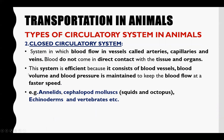The second type is called the closed circulatory system. In this system, blood flows through blood vessels differentiated into arteries, capillaries, and veins. Arteries carry blood from the heart; capillaries are involved in the exchange of nutrients and gases; and veins bring blood back to the heart. Blood is not in direct contact with the cells — communication occurs through interstitial fluid. This system is very efficient, and blood vessels maintain blood volume and pressure, allowing blood to move through the vessels at high speed.